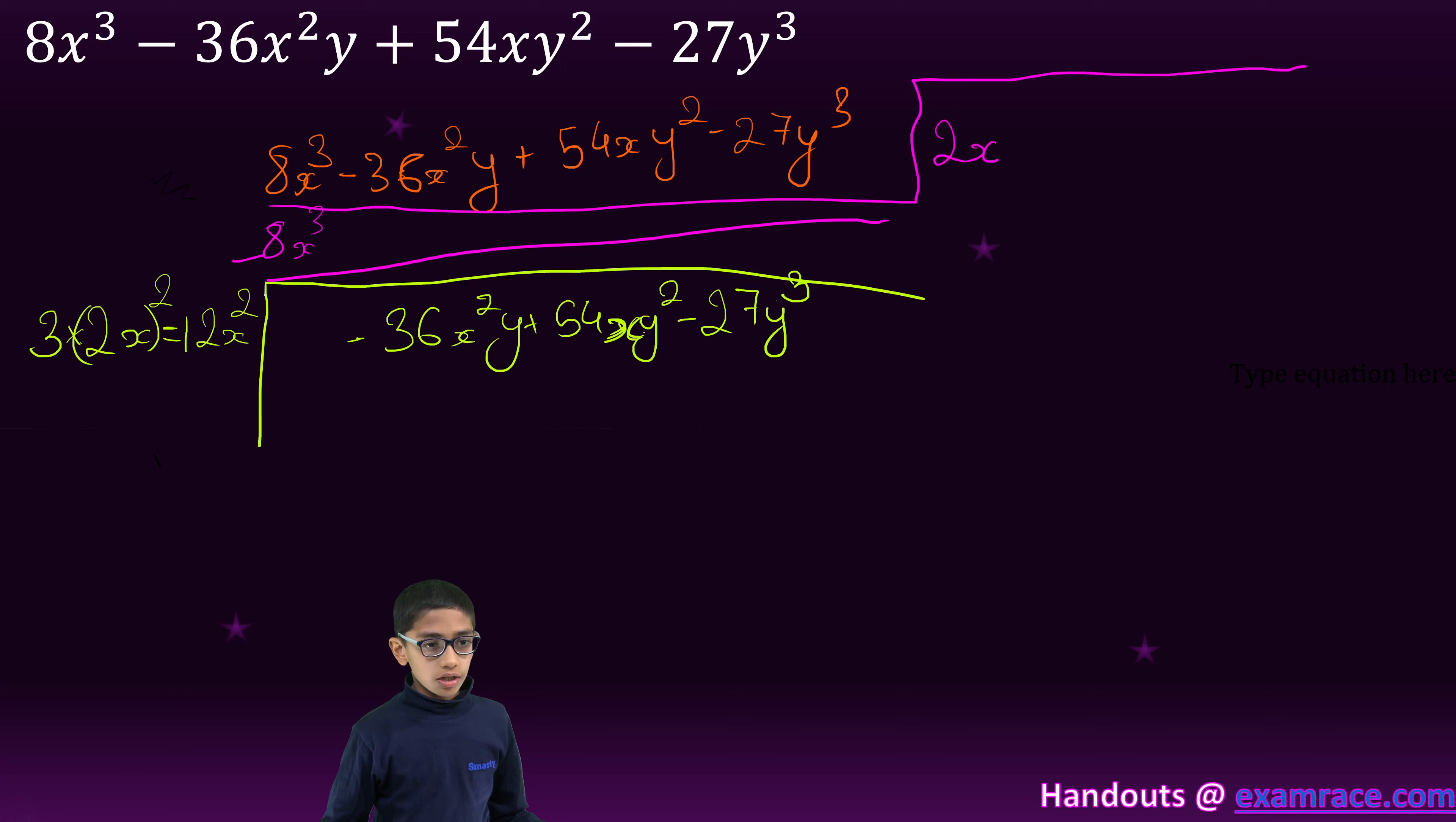Now again, we will divide 12x² by the first term. Our answer comes minus 3y.